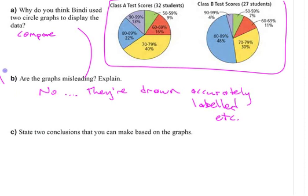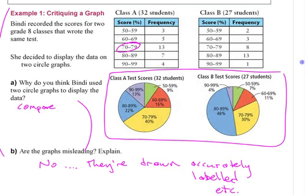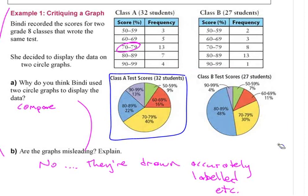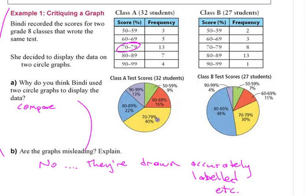State two conclusions. There's a whole bunch of conclusions you could make out of this. What might you conclude about these two classes? Usually students like to make conclusions like: Class A did worse than Class B. Why might you conclude that? Because A got more 50s and 60s. That's reasonable. What's another piece of evidence from the graph that supports that?